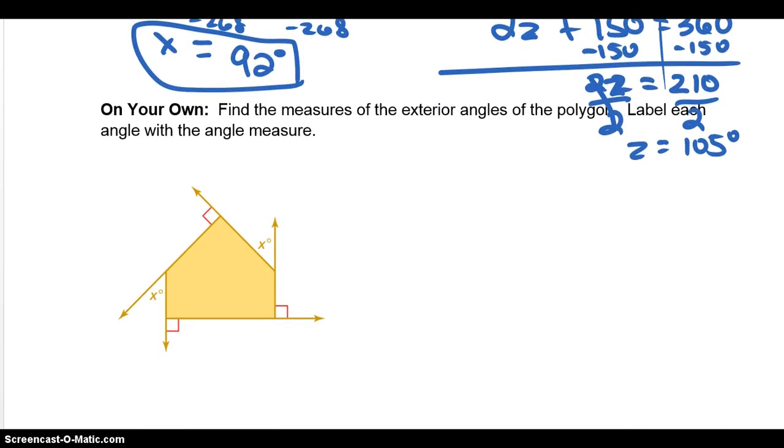Okay, so this one then on your own. Go ahead and find the exterior measures of the exterior angles of this polygon. Label each angle with its angle measure. So on this one, like I always say, label what you know first. Okay, you know this is on your own. But go ahead, you see that this is a right angle. So go ahead and put a 90 degrees there. So go ahead and fill those in with 90 degrees. And that's the last one for this section. So do those on your own and we'll see you tomorrow.